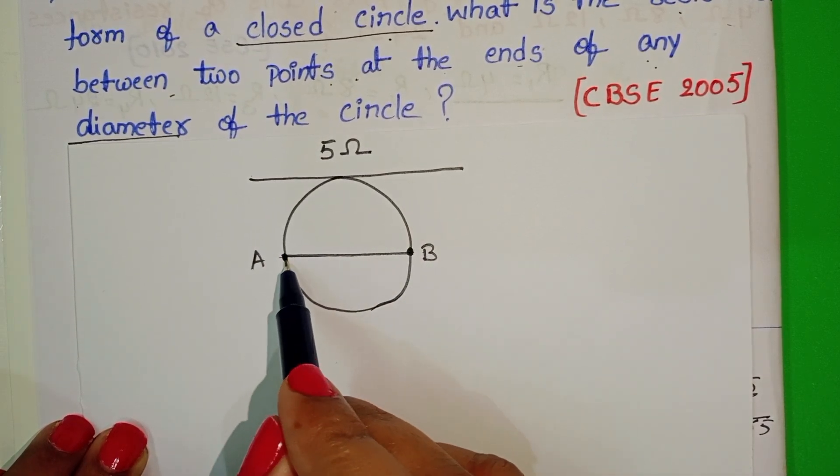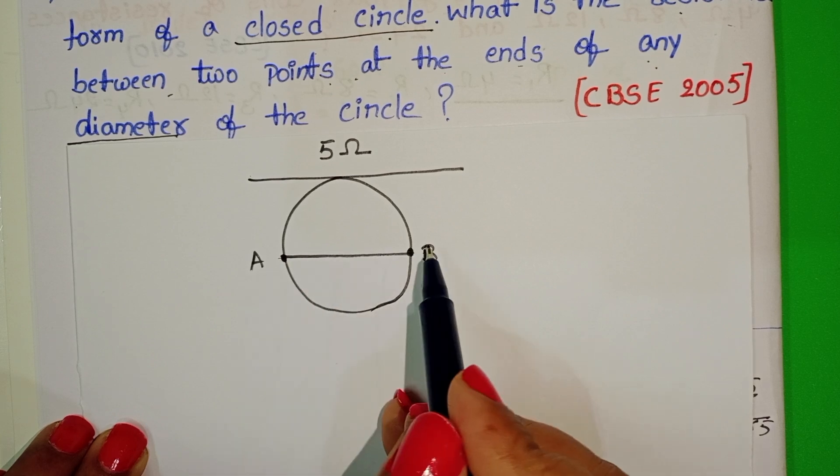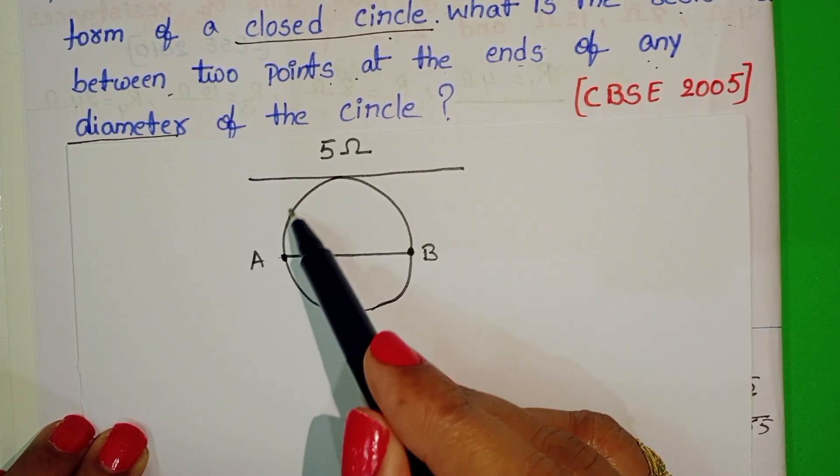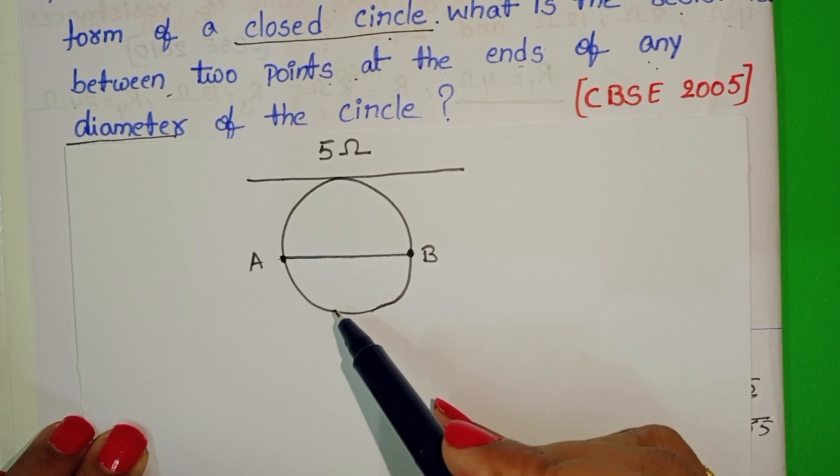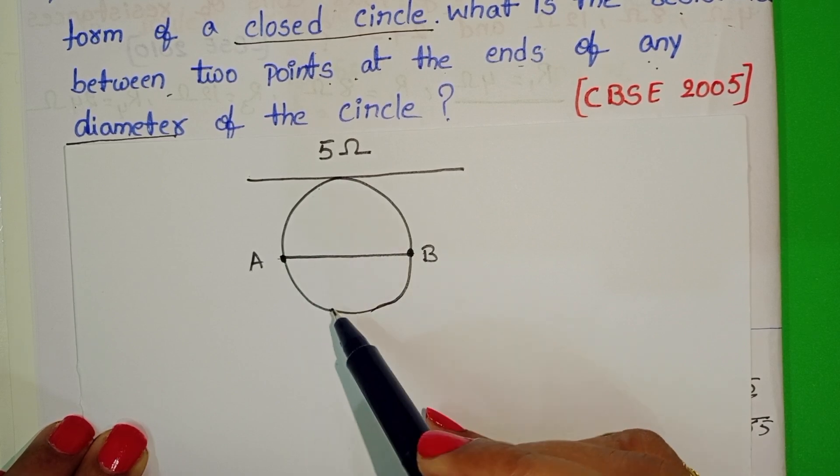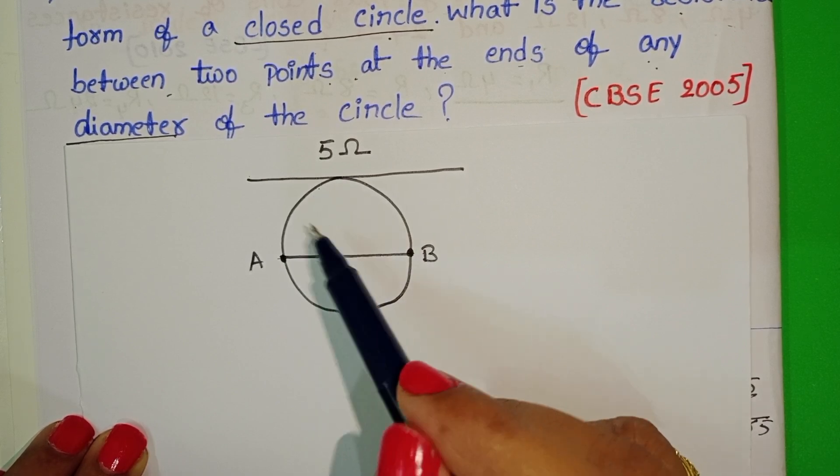We have to find out the resistance between these two points. Now this part of the circle is a semicircle and the lower part is also a semicircle. Now these two semicircles behave like two resistors.